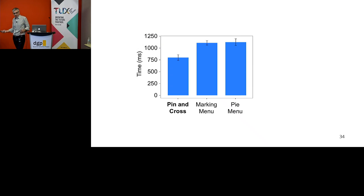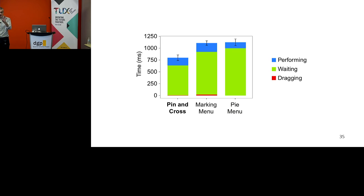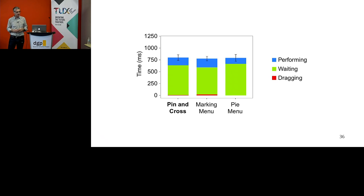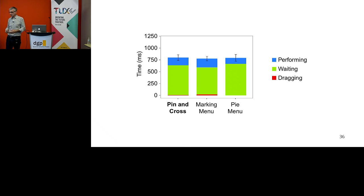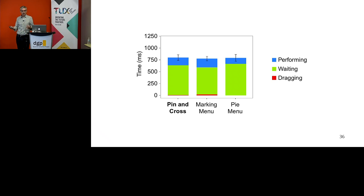We ran a study and got good results that pin and cross indeed has this benefit. If you subtract that 500-millisecond delay — let's assume dragging isn't a problem and there's some other way to support it — we're still very competitive. Pin and cross has an advantage when dealing with the 500-millisecond delay, and if you can somehow eliminate that for the other techniques, it's still similar. And the great thing is it's not an us-or-them decision — the two can work together quite nicely.